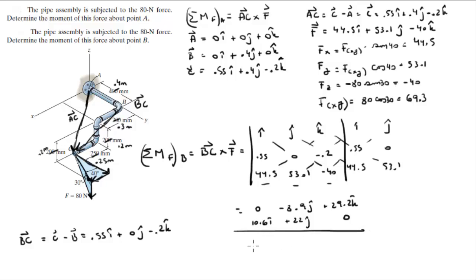When you add them together, you get that the moment that it creates about B is equal to 10.6i plus 13.1j plus 29.2k. And the unit, again, meters per newton, it's newton meters. Final answer for the second one.